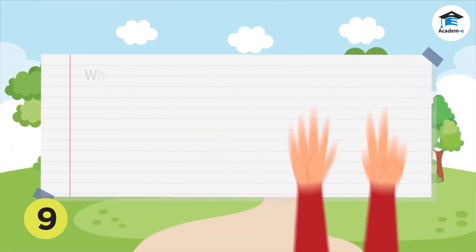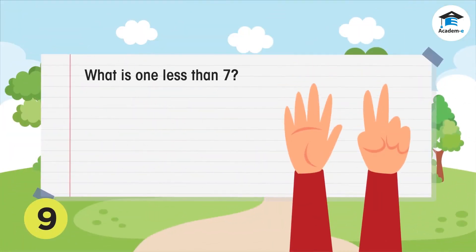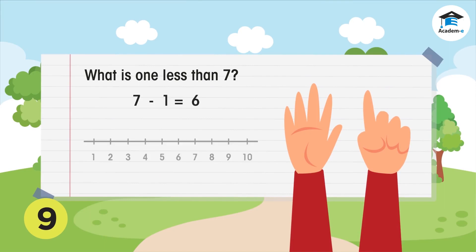Let's have these examples. What is one less than seven? One less than seven is six. Seven minus one equals six. On the number line, one step back from seven is six.